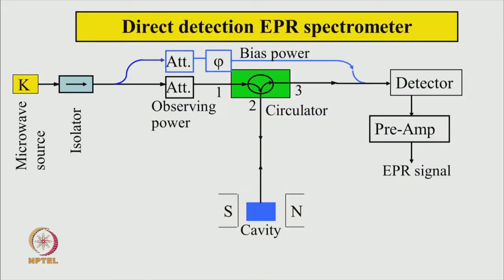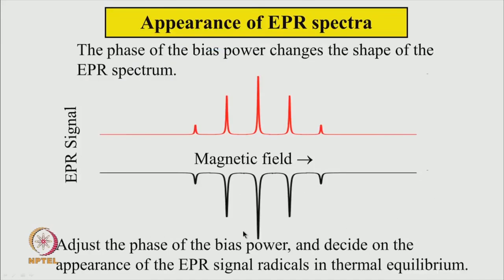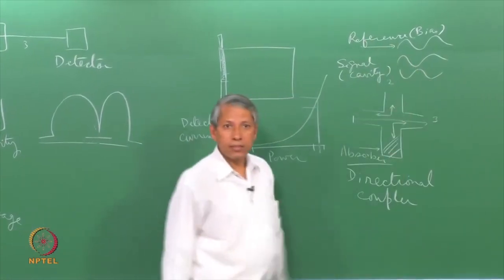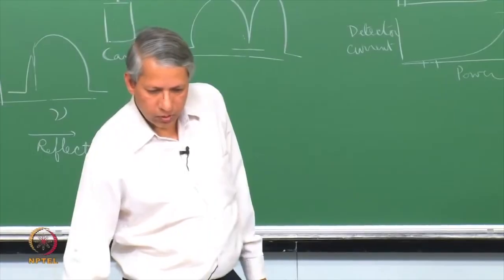What we have so far is called the direct detection EPR spectrometer. The detector signal generated is passed through a broadband preamplifier and we can get the EPR signal. To get the signal, I scan the magnetic field and record the output as a function of the magnetic field. The spectra will look like this - say, some hypothetical radical gives 5 lines. If you change the phase of the bias reference power by 180 degrees, the detector signal changes sign, so the spectrum can flip.